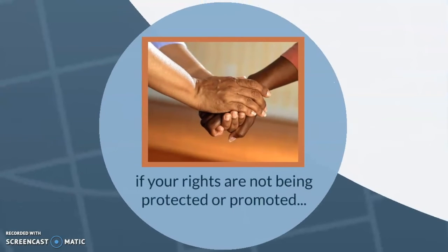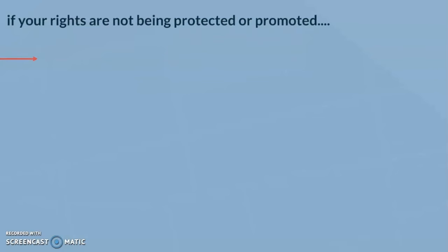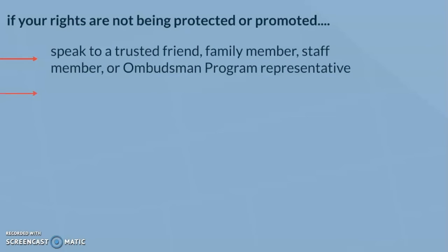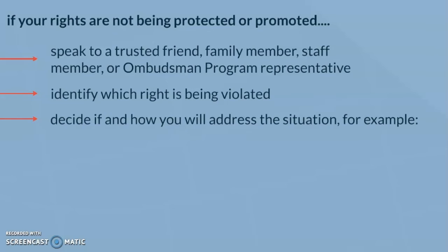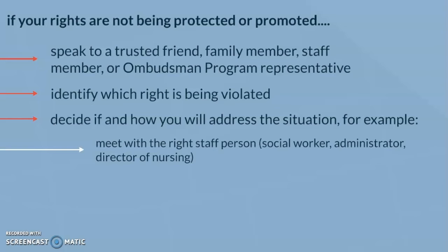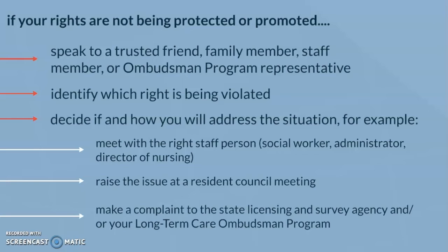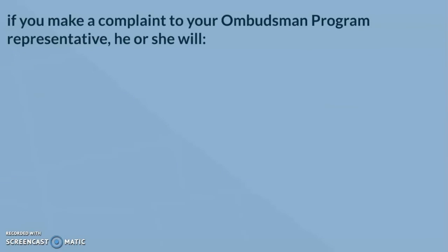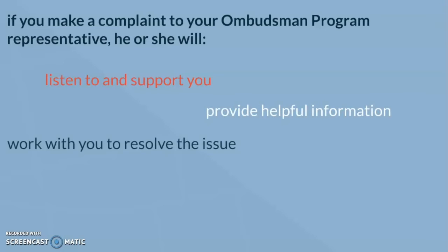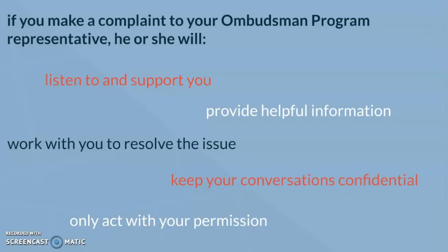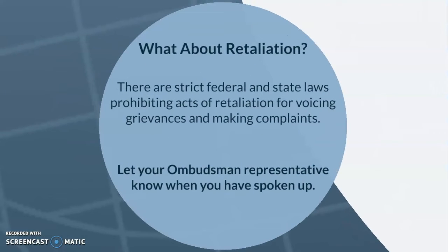If your rights are not being protected or promoted, speak to a trusted family member, friend, staff member, or an ombudsman program representative. Identify which right is being violated and decide if and how you will address the situation — for example, meet with the staff person, raise the issue at a resident council meeting, or make a complaint to the state survey agency or your long-term care ombudsman program. If you make a complaint to your ombudsman program representative, he or she will listen and support you, provide helpful information, work with you to resolve the issue, keep your conversation confidential, and only act with your permission. There are strict federal and state laws prohibiting retaliation for voicing grievances and making complaints.